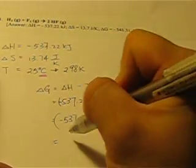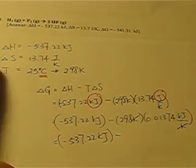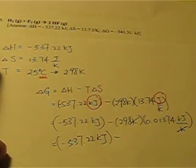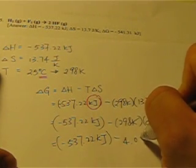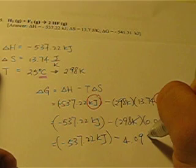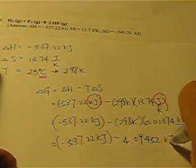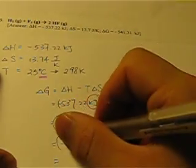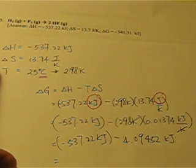And I am going to calculate the right portion. This portion with my calculator. So 298 times 0.01374. I would get 4.09452 kilojoules. And then I am going to have this operation.